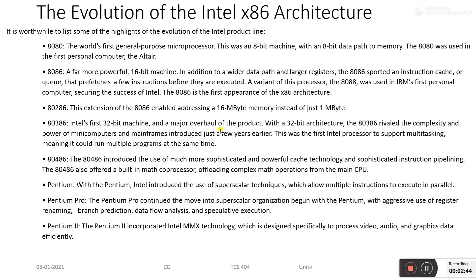The 8386 was a 32-bit machine. With its 32-bit architecture, the 8386 rivals the complexity and power of microcomputers and mainframes introduced just a few years earlier. This was the first Intel microprocessor to support multitasking, meaning it could run multiple programs at the same time.